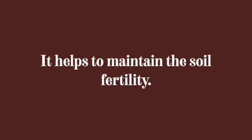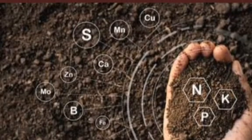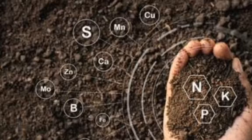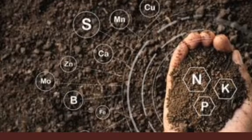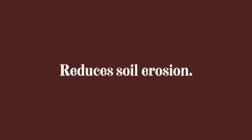The advantages of crop rotation: first, it replenishes or maintains soil fertility. When you rotate crops, you maintain the soil fertility — some crops take nitrogen out of the soil, then you plant crops that enrich the soil with nitrogen, such as leguminous crops. This helps maintain the fertility of the soil, as nutrients used up are returned to the soil after planting other crops.